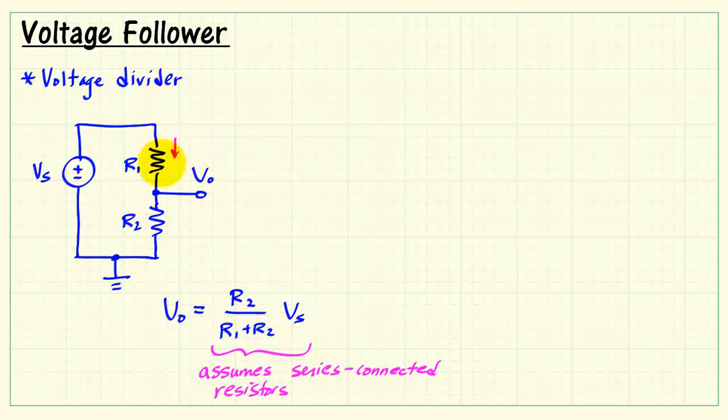Now, the current that flows through R1 will be Vs divided by the total equivalent resistance connected across Vs, and that's R1 plus R2.